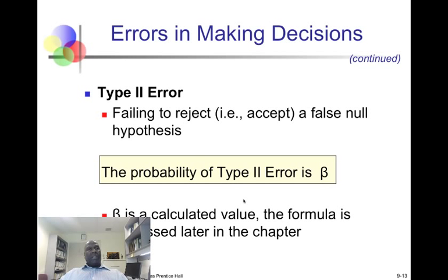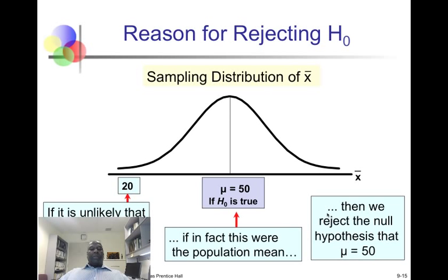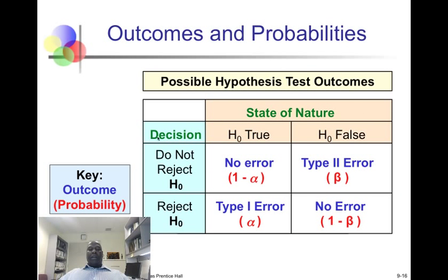The opposite also happens: the null hypothesis can be false, but we were not able to reject it. The person could actually be guilty, but we were not able to prove it. We call that a type 2 error, denoted by beta. In summary: if H0 is true and we do not reject H0, there is no error and the probability is 1 minus alpha. If H0 is true and we reject it, we have committed type 1 error. If H0 is false and we did not reject it, we have type 2 error. If H0 is false and we did reject it, there is no error, and the probability is 1 minus beta.